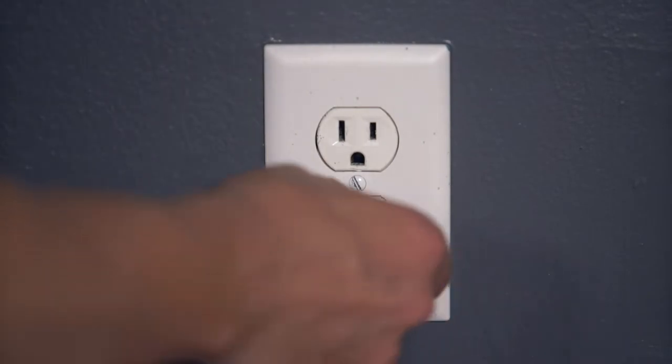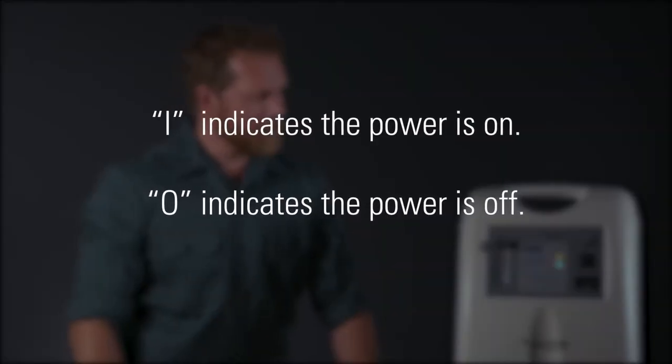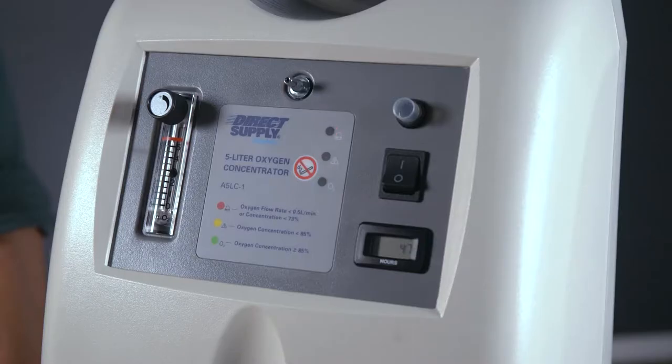Plug the concentrator into a 120-volt grounded AC power source. Turn on the concentrator by pressing the power switch. As the concentrator warms up, the lights on the front will blink in sequence. When only the green light remains lit, your Oxygen Concentrator is ready for use.